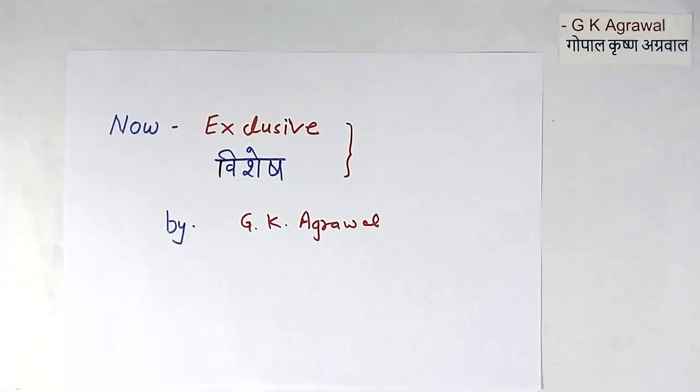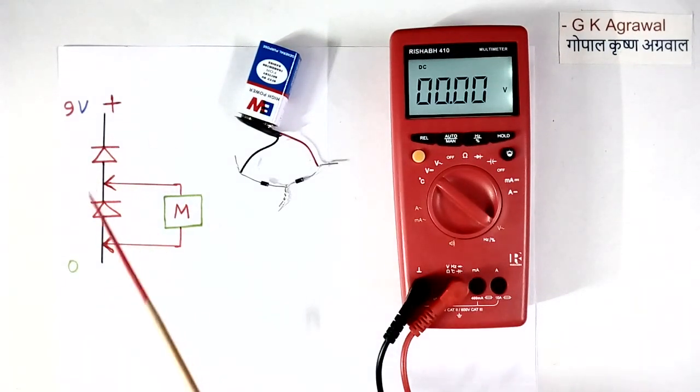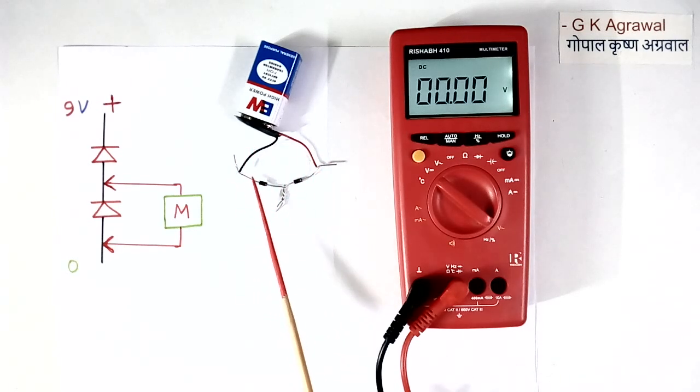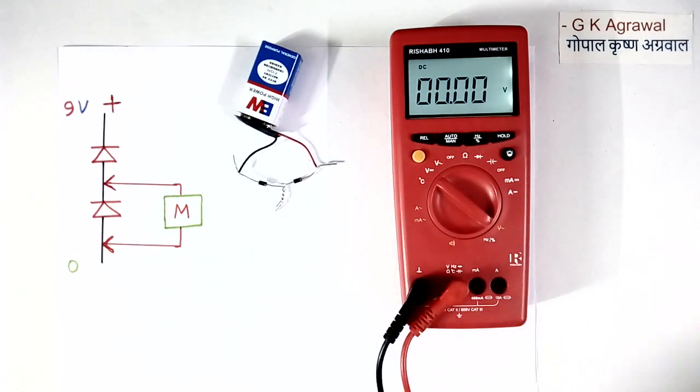Now I will show one exclusive experiment. Here I have shown these 2 diodes. These 2 diodes are here, and a battery is connected across these 2 diodes. Plus 9 volt is connected to the cathode. This is cathode of this diode. So this is plus, this is minus. Total voltage is 9 volt. That is battery voltage, 9.6 volt. Now I will connect this multimeter across this diode here. See how much voltage comes.